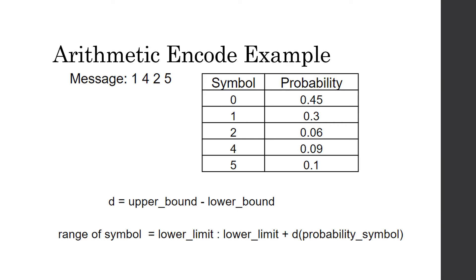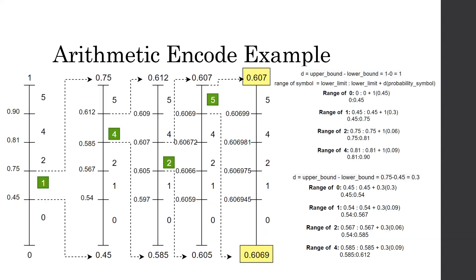This is the arithmetic encoding example. Say we have a message 1, 4, 2, 5, and the symbol and probability of each symbol is stated in this table. We have the probability of 0, but it is not transmitted. The formulas below are what we will use to calculate the intervals. We first have an interval between 0 and 1, and we divide that interval into subintervals.